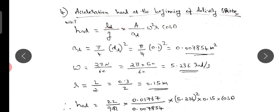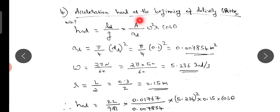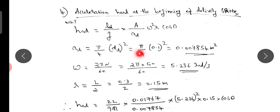Acceleration head at the beginning of the delivery stroke: the acceleration head in the delivery pipe is given by had = (LD / g) × (A / AD) × ω² × R × cos θ. Here, capital A is the cylinder area and small AD is the delivery pipe area. The area of the delivery pipe, AD = (π/4) × DD² = 0.007854 m².